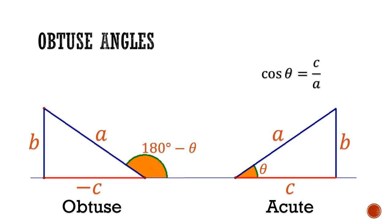For the cosine ratio, which is adjacent over the hypotenuse, cosine of the acute angle theta is C over A, but cosine of the obtuse angle 180 minus theta is negative C over A. Putting these two equations together, we conclude that cosine 180 minus theta is equals to negative cos theta.